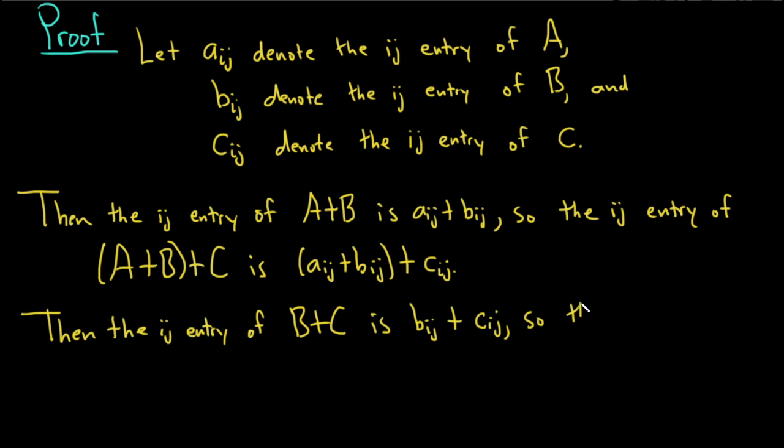So the ij entry of A+(B+C) is going to be a_ij + (b_ij + c_ij).